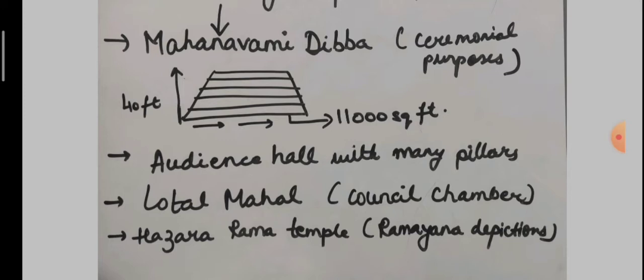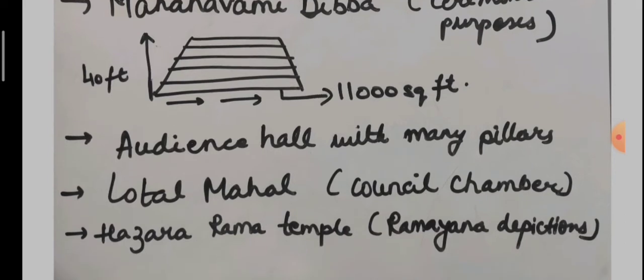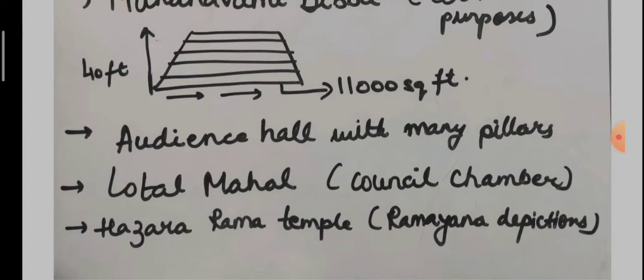Located on one of the highest platforms in the city is the Mahanavami Dibba, a massive platform rising from a base of about 11,000 square feet to a height of 40 feet. This is evidence that it supported a wooden structure on the above. Because wood perishes with time, the remaining structure is not found, but there were